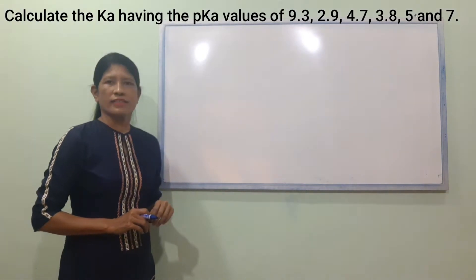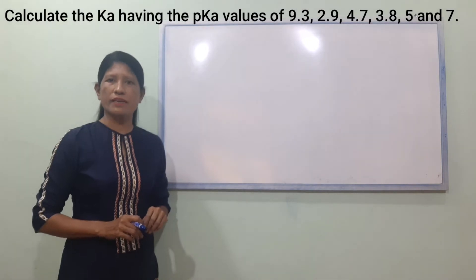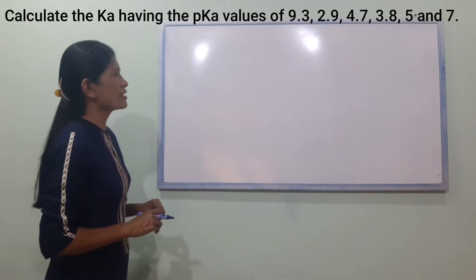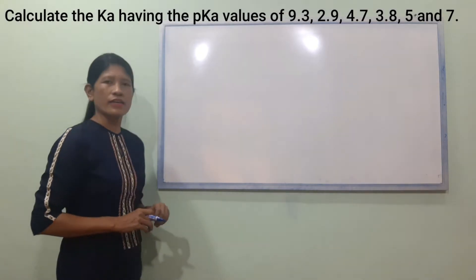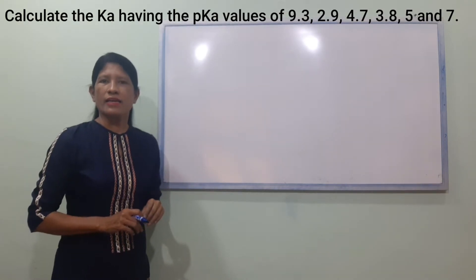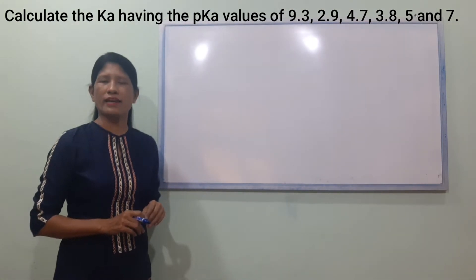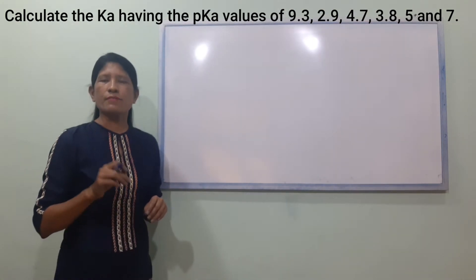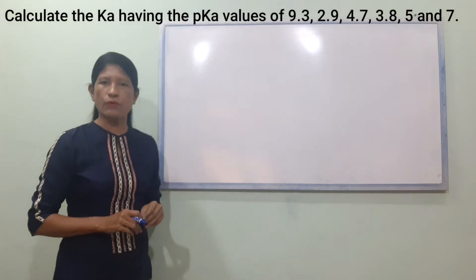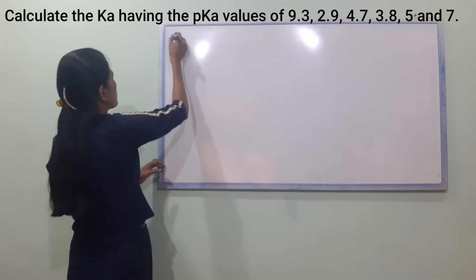These are the PKA values: 9.3, 2.9, 4.7, and 3.8. We are going to find Ka where PKA values are given.